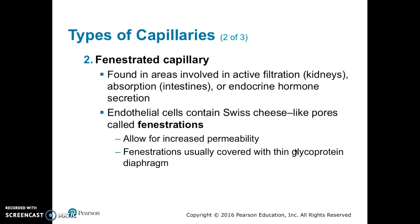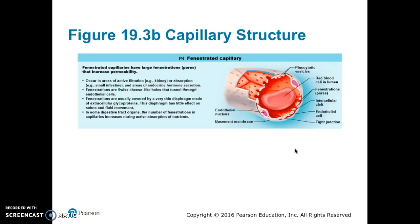The second type of capillary is the fenestrated capillary. These are found in areas where active filtration occurs, like the kidneys, absorption like the intestines, or where there is endocrine hormone secretion. The endothelial cells of fenestrated capillaries have pores like Swiss cheese called fenestrations, which allow for increased permeability. Here is a fenestrated capillary showing those fenestrations or pores.